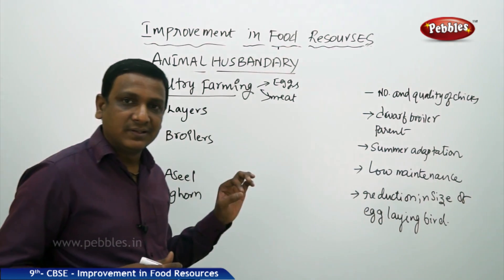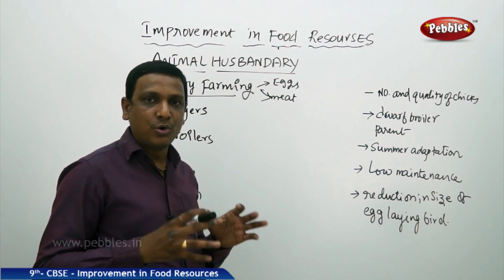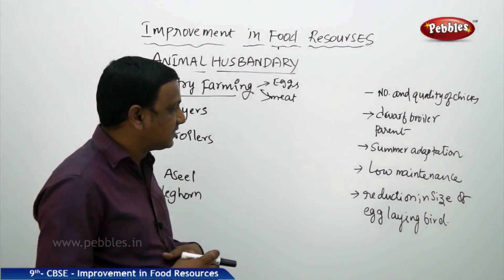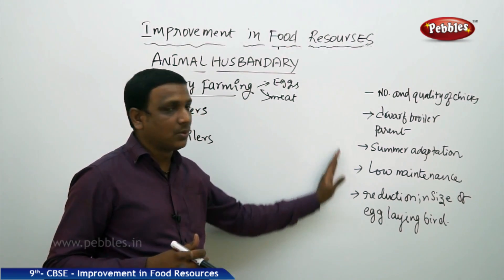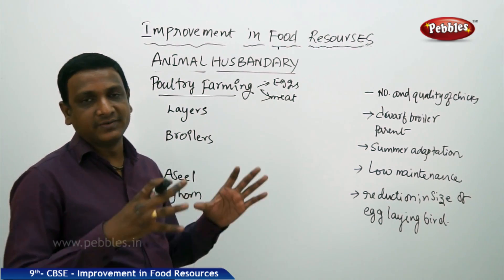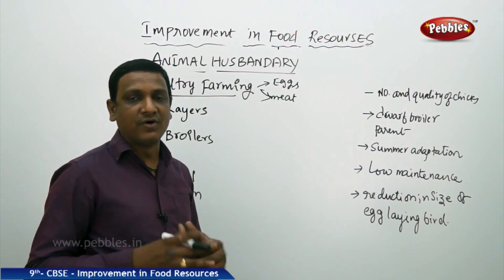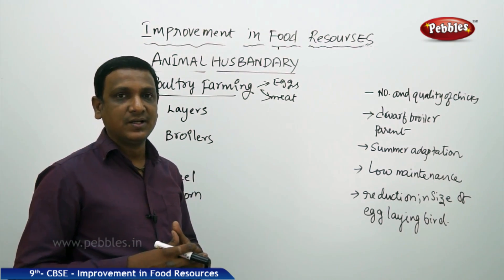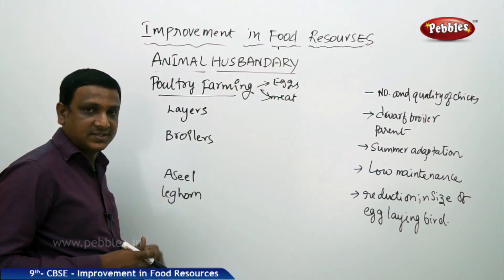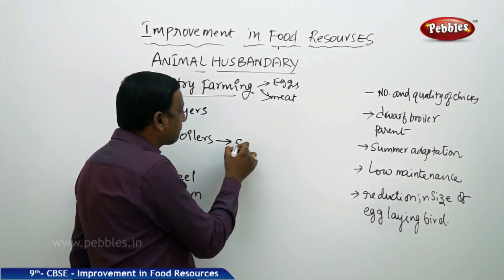Low maintenance is another quality — the variety should feed on low-cost feeds while maintaining good production, and there should be a reduction in the size of the egg-laying bird. These are the qualities expected in a poultry variety. If the birds selected have these qualities, the farmers will get good benefits. Among layers and broilers, the broilers are given proper care.